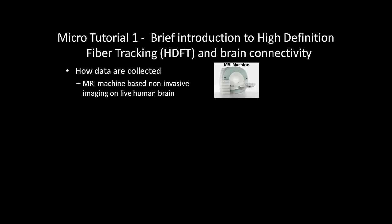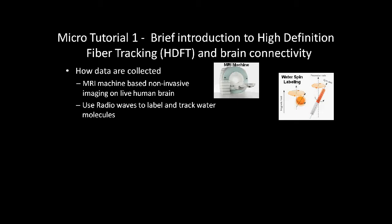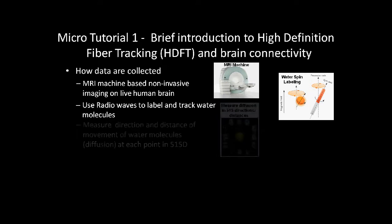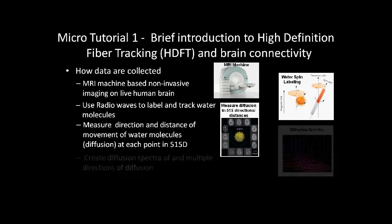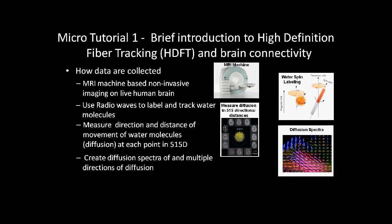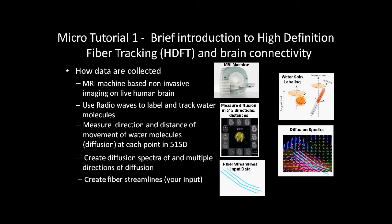What we do in high definition fiber tracking is we use an MRI machine. We collect, in essence, the spin of water molecules and use that data to plot the diffusion. We plot that diffusion in 515 directions for different lengths of diffusion and different directions within that set. Based on that, we then create a diffusion spectra at each location in the brain — what are the directions that we have molecules diffusing — and that way we can see whether there's a single direction, which would be the case of a single fiber tract, or two directions if we have two fibers crossing. Based on that, we then create streamlines of information to identify the fiber tracts, and that's the underlying data of this competition.